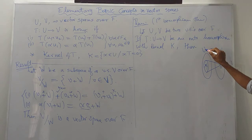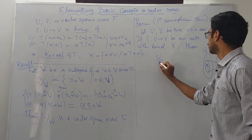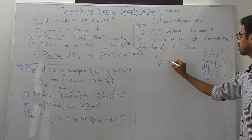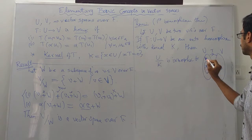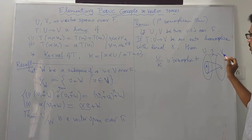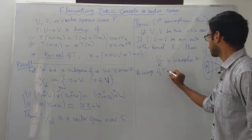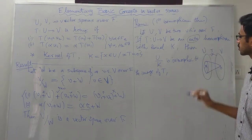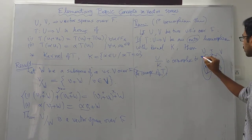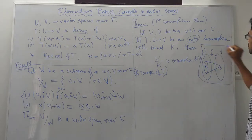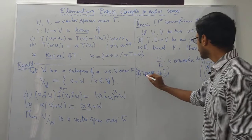Since the kernel is a subspace of the domain U, we can automatically define the quotient space U modulo K. This quotient space is isomorphic to the image of T. Since T is onto, the image of T equals the codomain V.